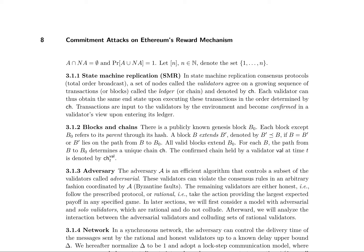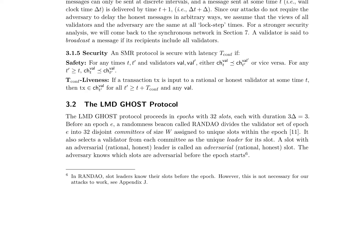They introduce the concept of state machine replication (SMR) consensus protocols, where a set of nodes called validators agree on a growing sequence of transactions or blocks called the ledger. In their model, each block extends a parent block through its hash, and a block B′ extends B if B lies on the path from B′ to the genesis block B0. The authors define the adversary A as an efficient algorithm that controls a subset of validators, which can violate consensus rules in an arbitrary fashion. The remaining validators are either honest, following the prescribed protocol, or rational, taking the action providing the largest expected payoff. The authors assume a synchronous network, where the adversary can control the delivery time of messages sent by rational and honest validators up to a known delay upper bound Δ. They normalize Δ to be one and adopt a lockstep communication model, where messages can only be sent at discrete intervals.